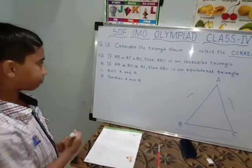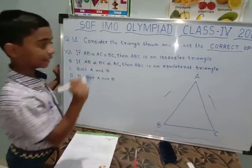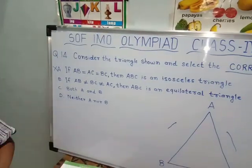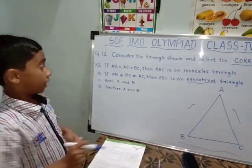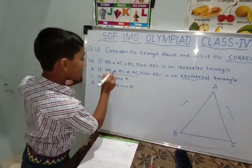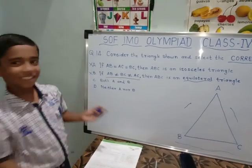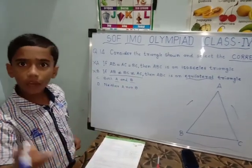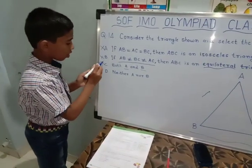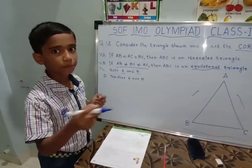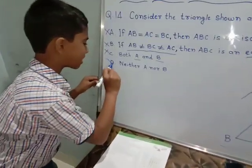Option B: if AB is not equal to BC and not equal to AC, then ABC is an equilateral triangle. That is also wrong because the condition given is not correct. Option C can't be right because both A and B are wrong, so C is also wrong. The fourth option is neither A nor B — meaning neither answer is correct there. So option D is correct.